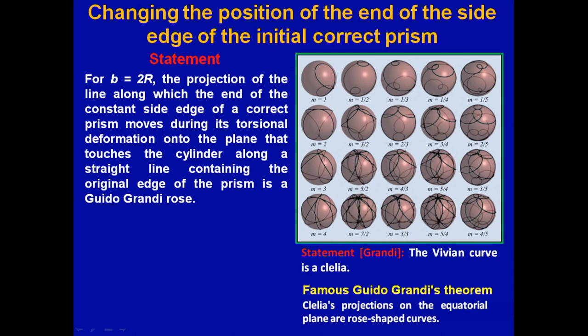the projection of the length, along which the end of the constant side edge of a correct prism moves during its torsional deformations onto the plane that touches a cylinder along a straight line containing the original edge of the prism is the Guido-Grande rose.